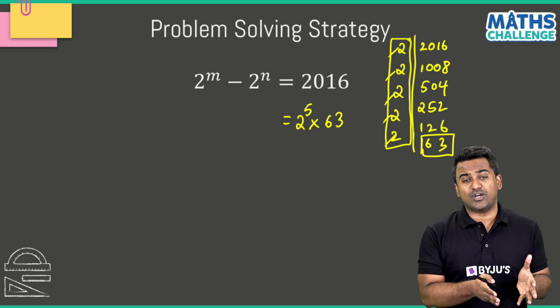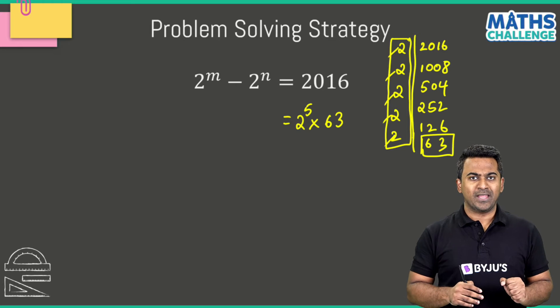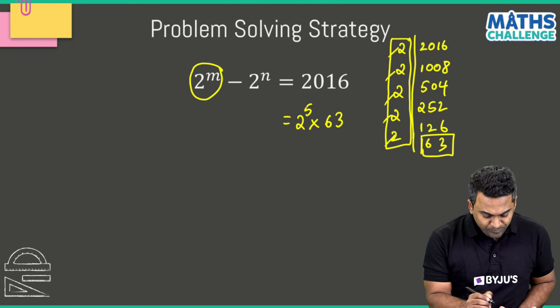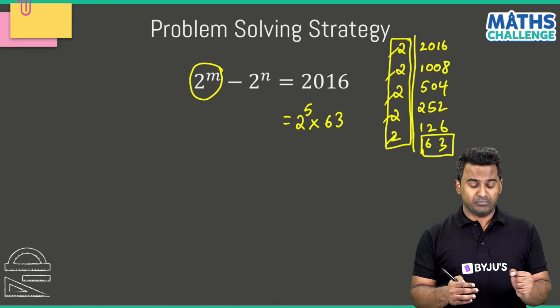So 2016 can be written as 2 power 5 multiplied with 63. Now I've got to convert the left hand side of the equation in a similar form, and that's pretty simple.